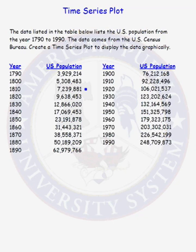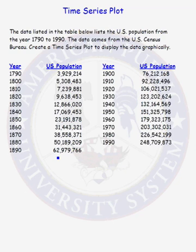We are going to use a time series plot to look at this data graphically. Why was a time series plot chosen? A time series plot is a great plot to show how a particular variable — in this case the United States population — is changing over time. A time series plot graphs the time variable, in this case year, on the x-axis and the corresponding population on the y-axis.